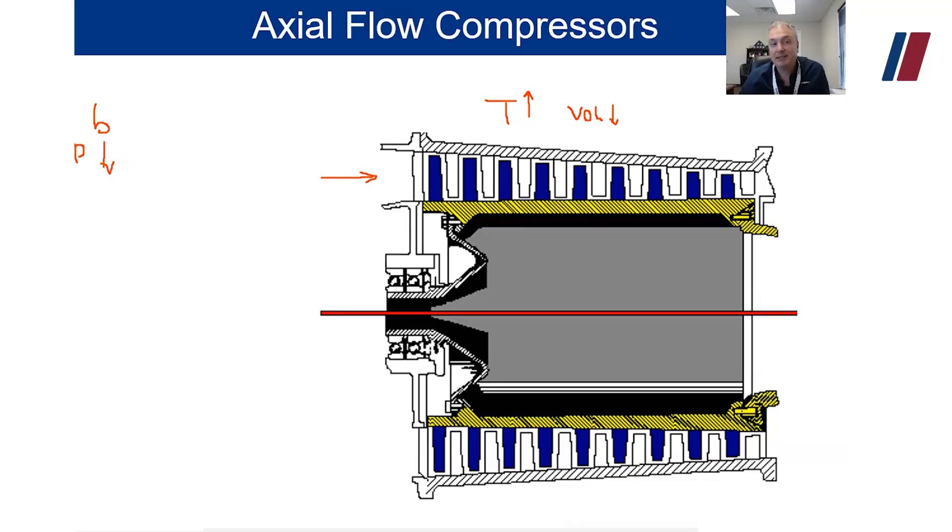But velocity will actually increase in the blade area until it hits the vein. Once we hit the vein, velocity goes down, but pressure will go up.